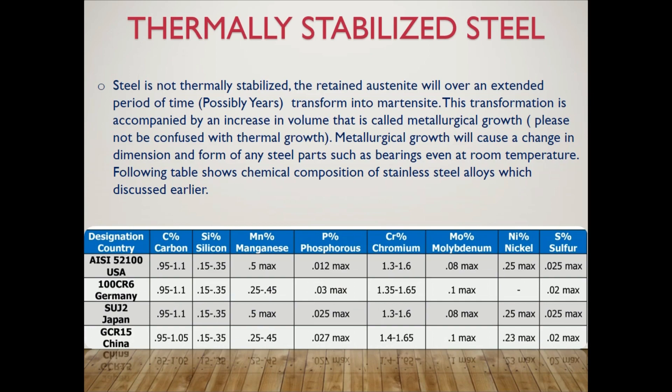In Japan: Carbon 0.95–1.1%, Silicon 0.15–0.35%, Manganese 0.5% max, Phosphorus 0.025% max, Chromium 1.32–1.6%, Molybdenum 0.08% max, Nickel 0.25% max.